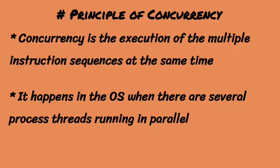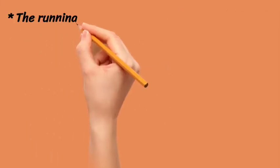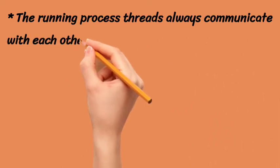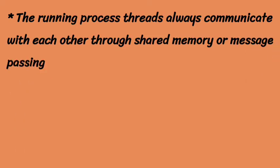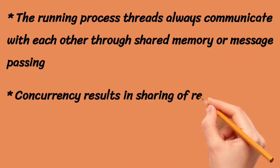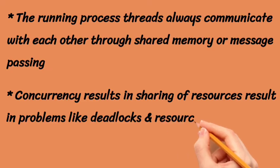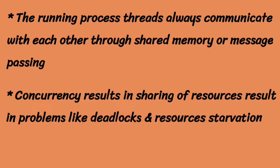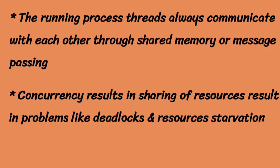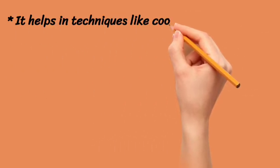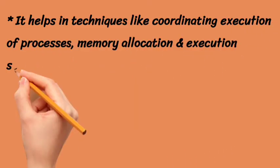When processes are running in parallel in an operating system, the running processes communicate with each other. How do they communicate? In two ways — either in shared memory or in message passing. That is what happens when concurrency occurs.